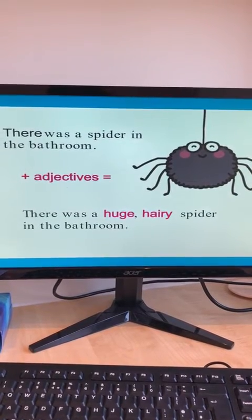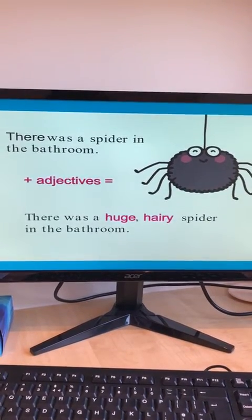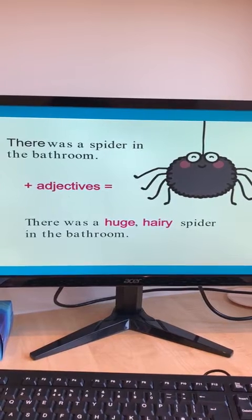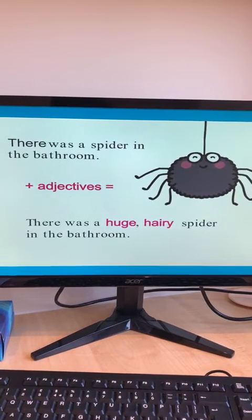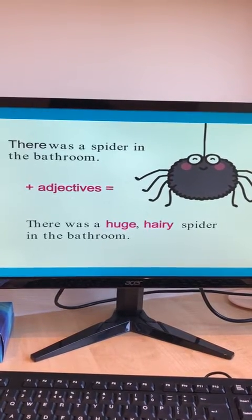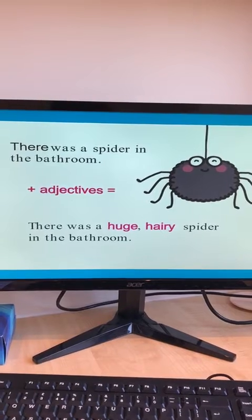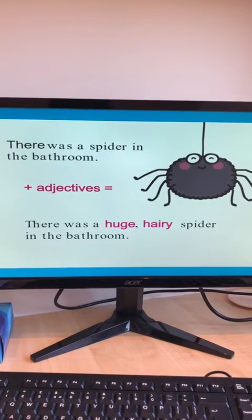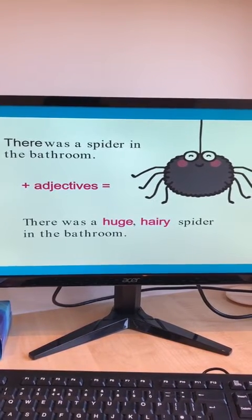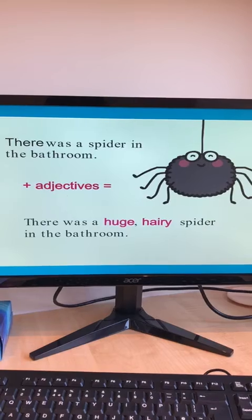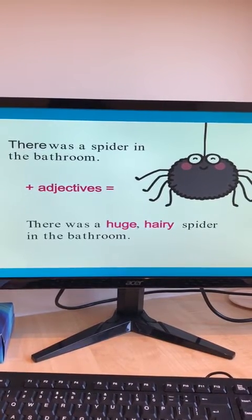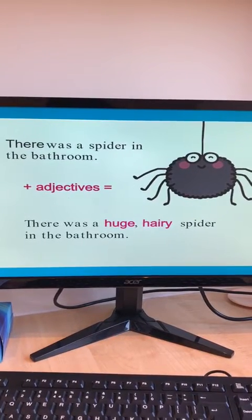So what do you think of this sentence? There was a spider in the bathroom. Well I think it's quite boring and we don't really know much about the spider. If we add two adjectives to make it there was a huge hairy spider in the bathroom, now we know more about what the spider looks like.